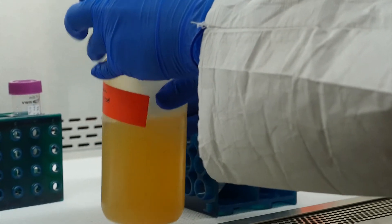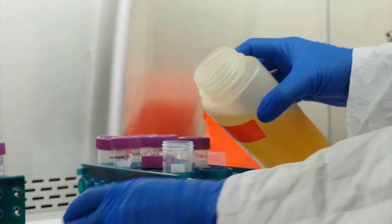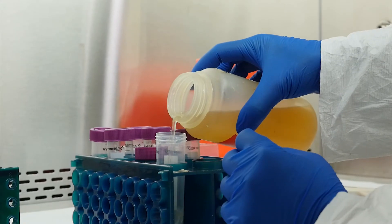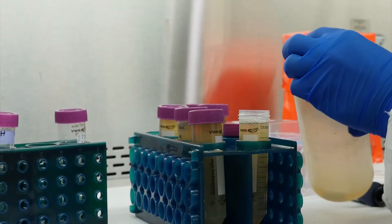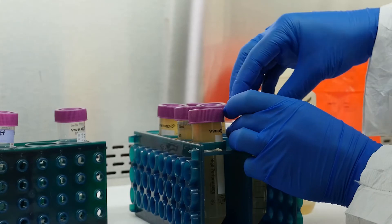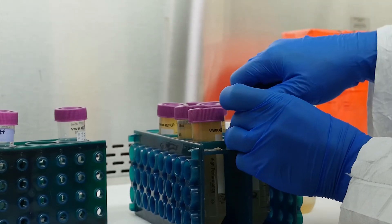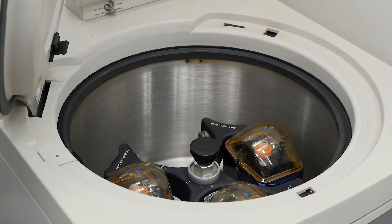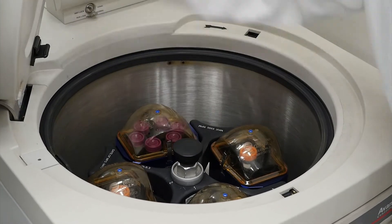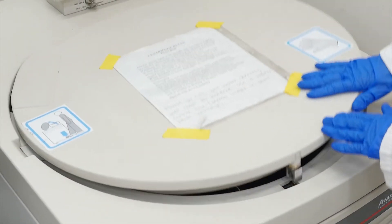After 2 hours has passed, remove the sample from the shaker and transfer the sample to conicals compatible with your centrifuge rotor. For this demonstration, we will transfer into six 50 milliliter conicals. Spin the sample at 3,500 G at 4 degrees Celsius for 30 minutes.